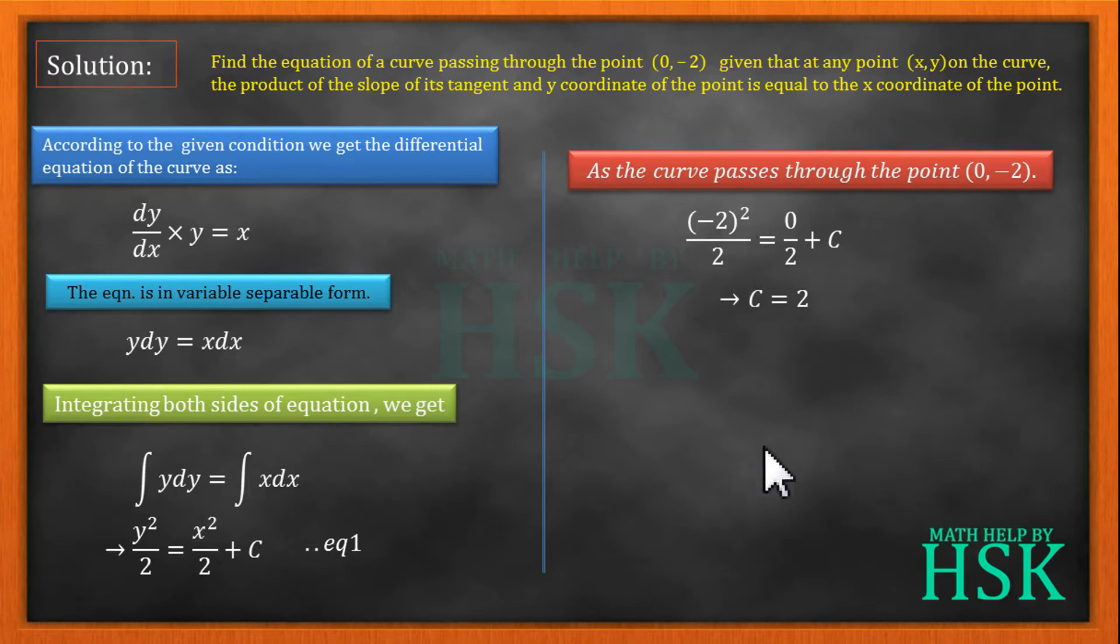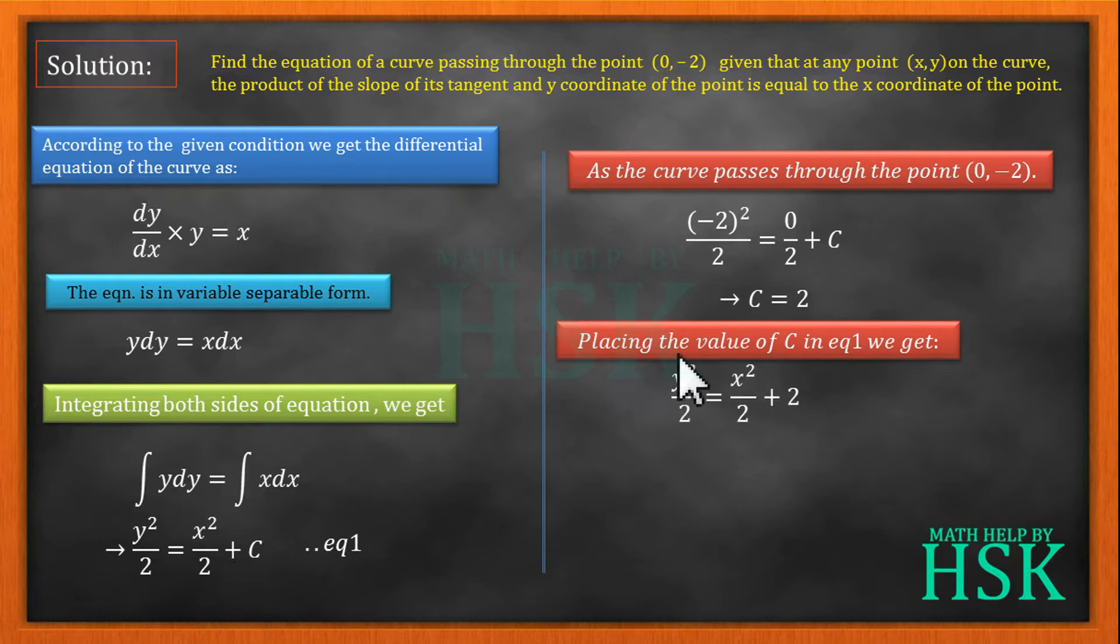Substituting the value of C in equation number one, placing the value of C, I get y²/2 = x²/2 + 2. This 2 is going to cross multiply to give me y² = x² + 4, or transferring x² to the left hand side, I get y² - x² = 4.